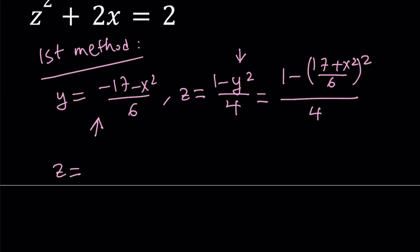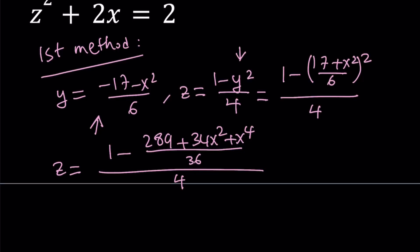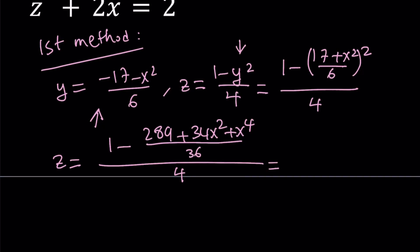If you square the top and subtract it from 1, you're going to get the following: 1 minus 289 plus 34x squared plus x to the fourth power. And then that's going to be divided by 36, and all of that is going to be divided by 4.